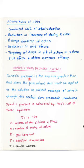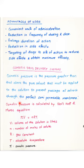Let us now look at the definition of osmosis or osmotic pressure. Osmotic pressure is the pressure greater than that above the pure solvent and must be applied to the solution to prevent passage of the solvent through a perfect semi-permeable membrane. Osmotic pressure can be determined by use of the osmometer.